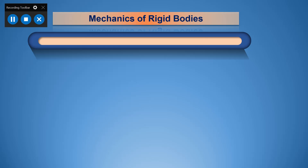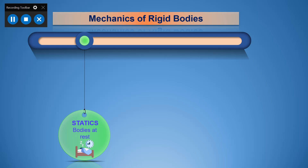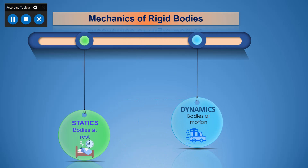Mechanics of rigid bodies is classified into two: statics and dynamics. Statics deals with the study of bodies that do not move — the study of bodies subjected to some forces while remaining at rest. Dynamics is the study of bodies in motion — when a force acts on a body and the body moves, we analyze the motion including velocity, acceleration, etc. These are the two main classifications of mechanics of rigid bodies.